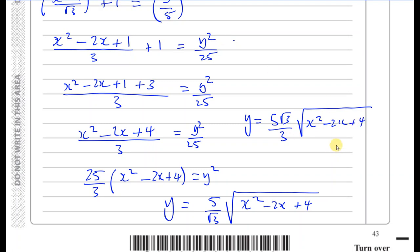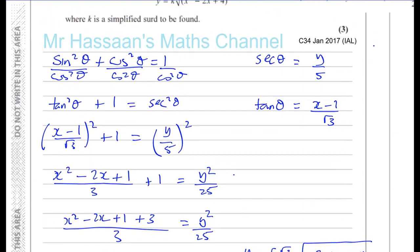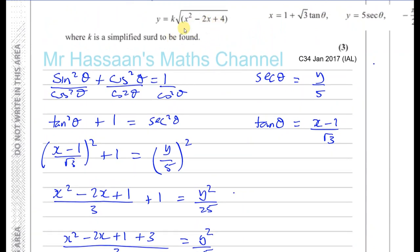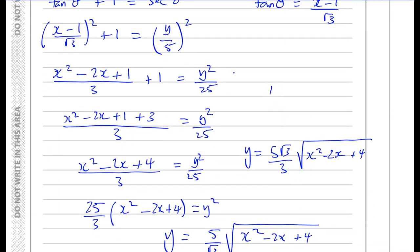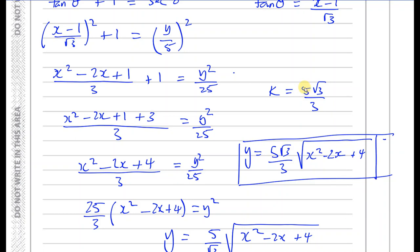Taking the square root: y equals 5 over root 3 times the square root of x squared minus 2x plus 4. Rationalizing the denominator gives y equals 5 root 3 over 3 times the square root of x squared minus 2x plus 4. So k equals 5 root 3 over 3.